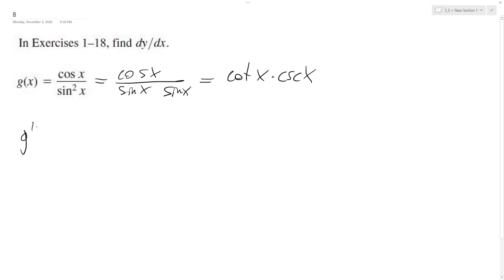So to do that, g prime of x is going to be equal to d dx of cotangent x cosecant x plus cotangent x times d dx cosecant x.